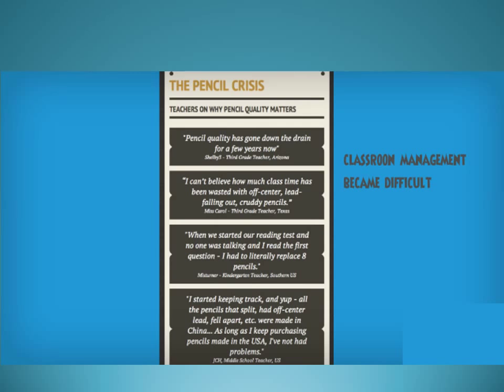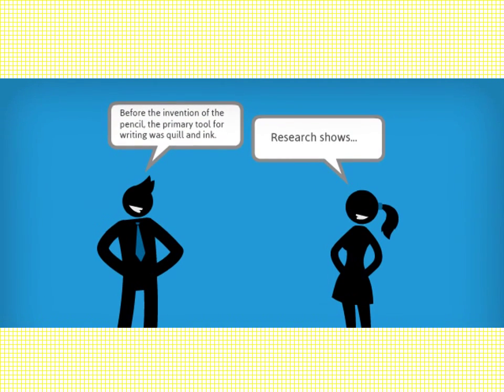Before the invention of the pencil, the main tool for writing was quill and ink. It required a good feather and ink to cautiously write letters onto paper. This process was very time consuming and messy.